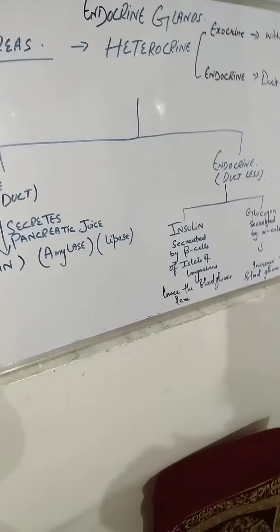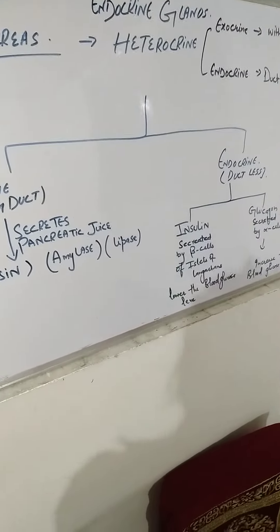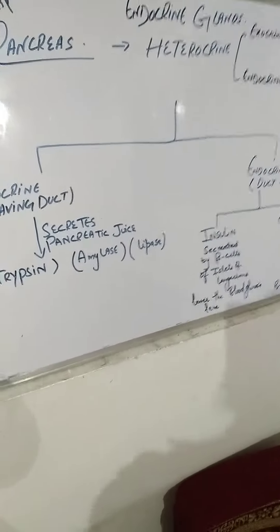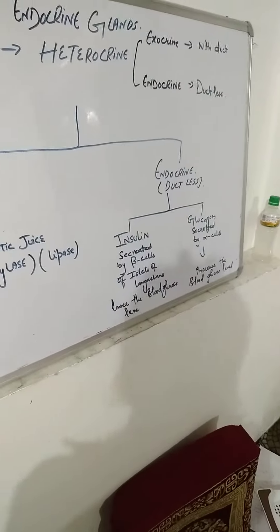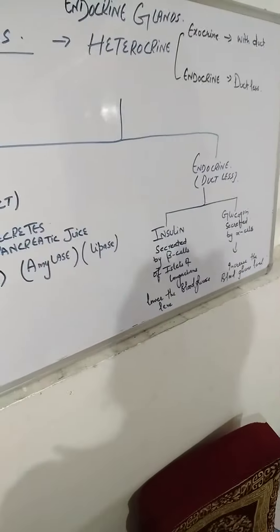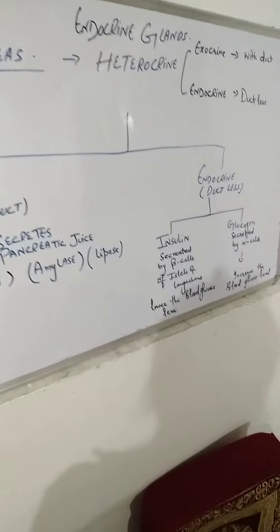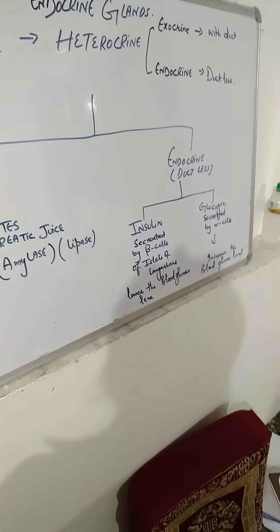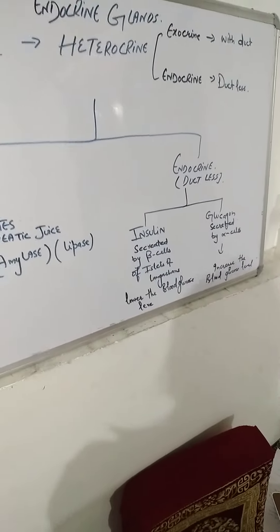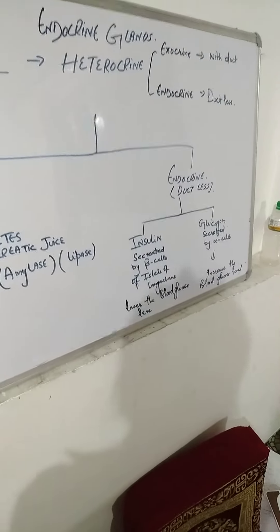The pancreatic cells are called the islets of Langerhans. The islets of Langerhans have five types of cells; here we discuss two: beta cells and alpha cells. Beta cells secrete insulin, which lowers the blood glucose level, while alpha cells release glucagon, which increases the blood glucose level.